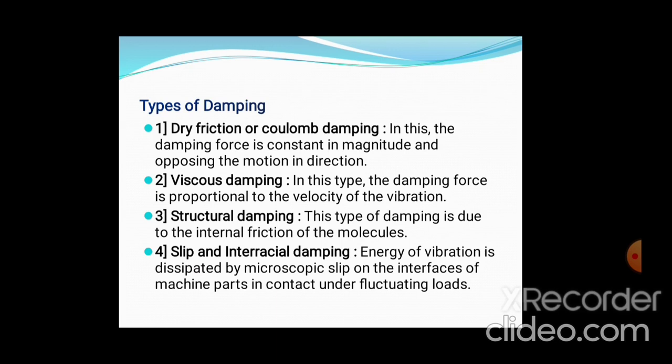Types of damping depend upon some factors. The first type is dry friction or Coulomb damping. In this case, the damping force is constant in magnitude and opposes the motion in direction. In dry friction or Coulomb damping, there is a negligible amount of viscous force — it exists under a situation that is free from viscous force. That is dry friction.